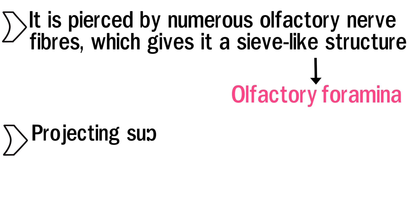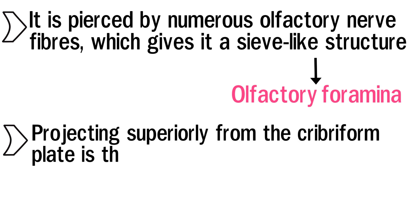Projecting superiorly from the cribriform plate is the crista galli, which gives attachment to the falx cerebri, a sheet of dura mater.